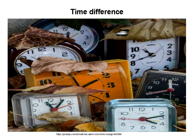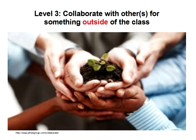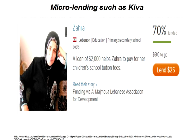I want to talk about the next tier, which moves beyond simply communicating with somebody to actually collaborating with that class to do something outside of the class. In the other ones we do projects and talk about things — but it's class to class and only the class benefits from it. For example, I've seen a thing where two schools raised enough money to sponsor somebody in Kiva and they chose someone trying to get education. These two classes then followed this person, paid the loan, and found out what happened in terms of her being able to educate her children.